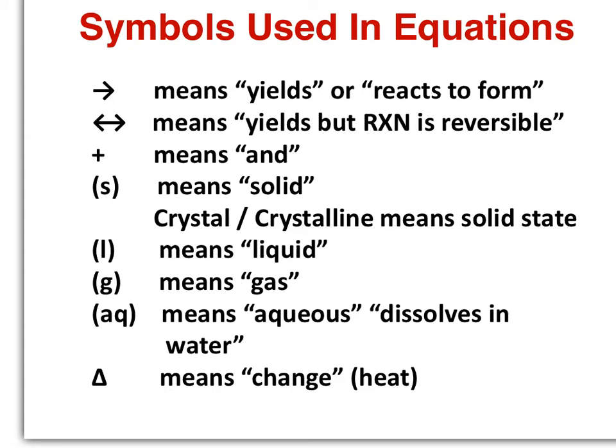Just like in math class, there are lots of symbols used within chemical equations. The first and most prominent is an arrow, which means 'to yield' or 'something reacts to form.' Sometimes you'll see a double-headed arrow for reversible reactions, where they can go to the products and then back towards the reactants, but we won't run into that much in this chapter.